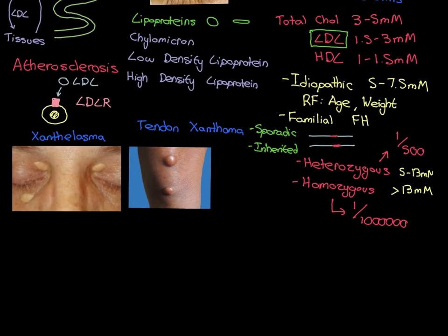Let's say we have mum and dad. The symbol for male, symbol for female. Mum and dad are completely normal - they are not affected by FH. They both have normal copies of the LDL receptor gene. These represent both homologous chromosomes that are going to have the genes for the LDL receptors on, and let's say they are completely normal. Dad's two genes are normal, mum's two genes are normal.